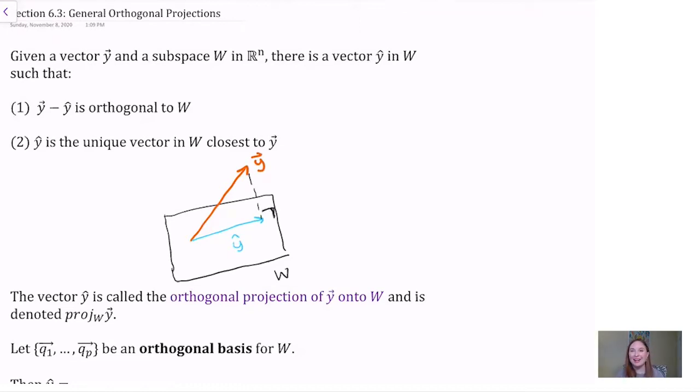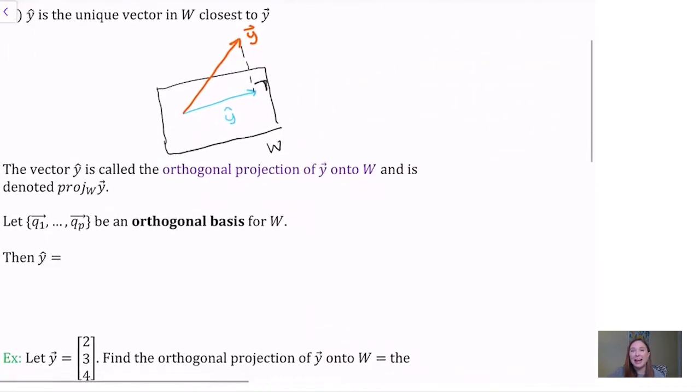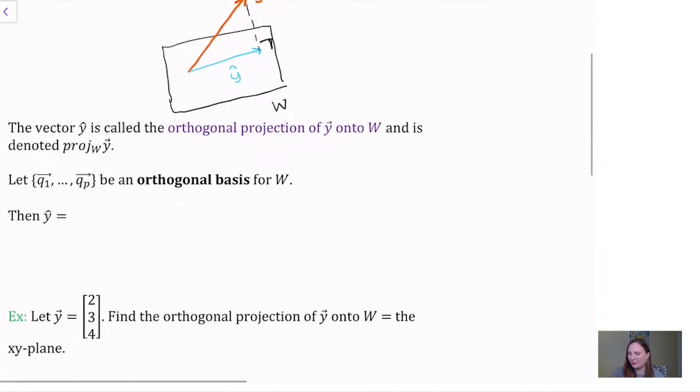This unique vector y hat is called the orthogonal projection of y onto w, and is denoted projection sub w of y. Our goal for today is going to be to determine how we find that orthogonal projection.